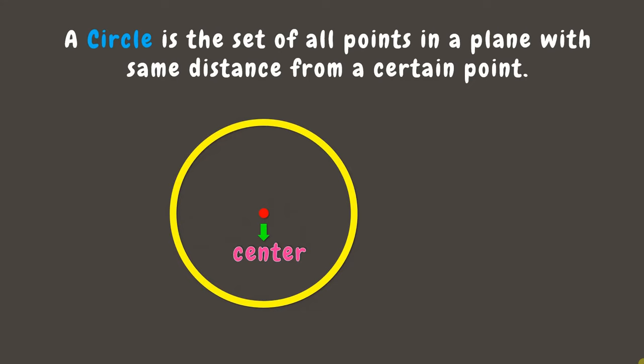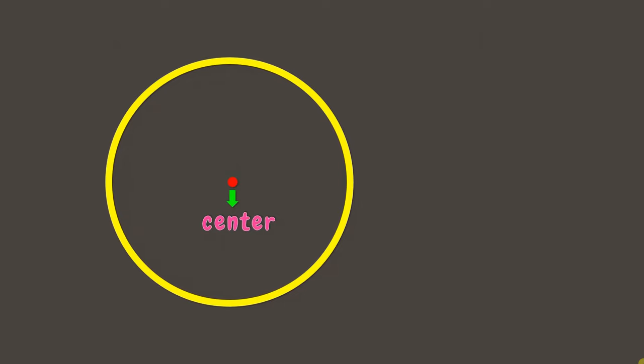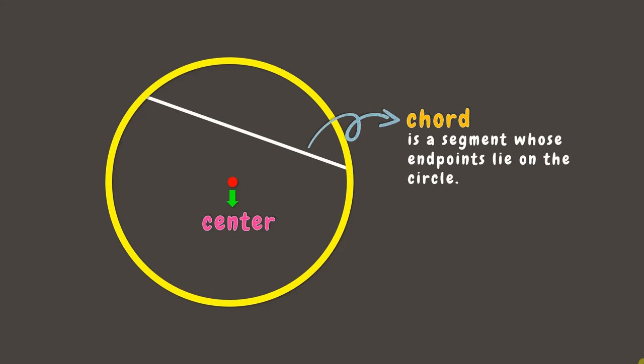Now, aside from the center, let's learn more about the parts or terms related to circle. First, we have the chord. A chord is a segment whose endpoints lie on the circle.